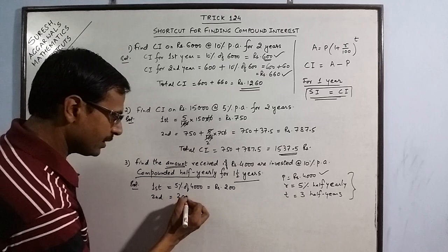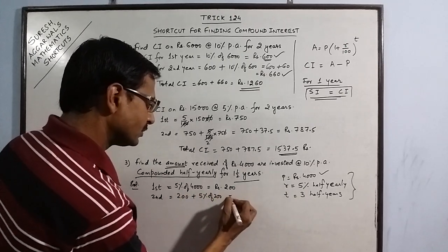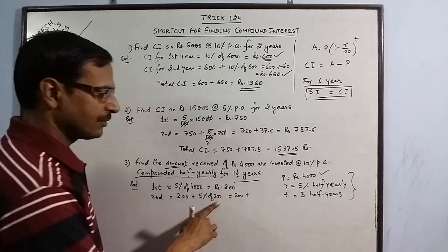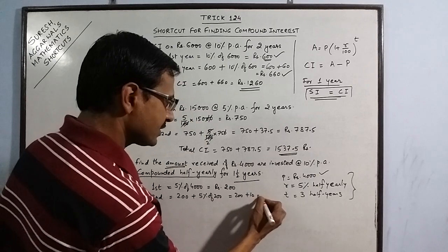Second, 200 plus 5% of 200. 200 plus 5% of 200 is 10, Rs. 210.